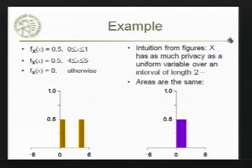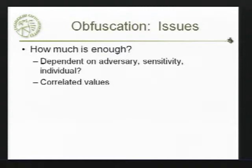What are the issues in this? How much is enough? It depends on the adversary, what they're trying to do with the data, on the sensitivity of that particular data, and on the individual. If we had one person in this room who was 80 years old and everybody else was in their 20s, adding plus or minus 10 probably would seem like it's providing a lot of obfuscation to the people in their 20s. But the person who's 80 — so you're 70 or 90 — it doesn't seem that much different. Also, there's a problem with correlated values: what happens if you have age and birthdates?